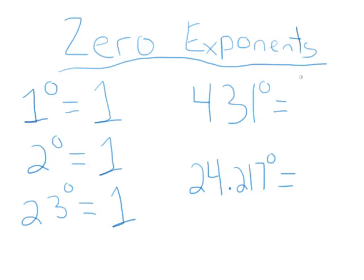431 to the zero power is 1 and 24.217 to the zero power is 1. In fact, anything to the zero power is always 1.